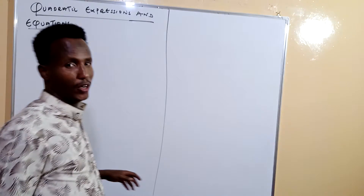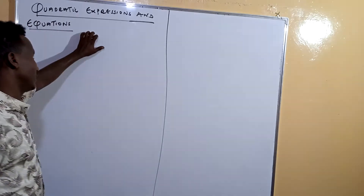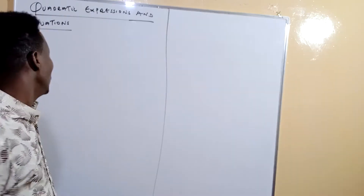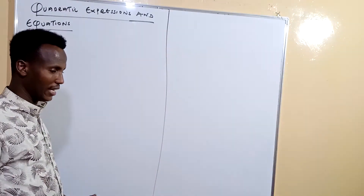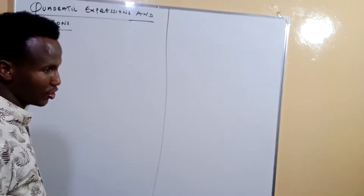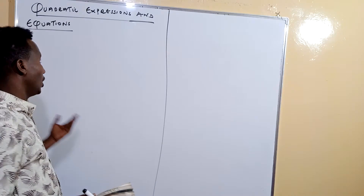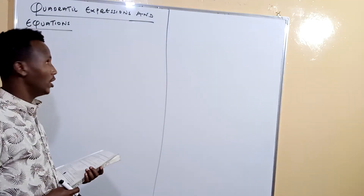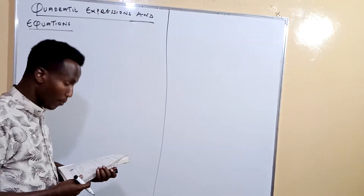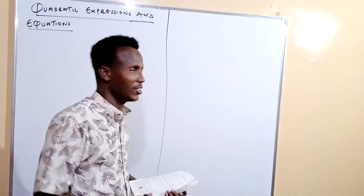Let's come back. We're going to discuss mathematics for Form 3, the first chapter — quadratic expressions and equations. Remember, we learned this concept in our previous class in Form 2. It is basically similar, but here you will encounter different concepts. In Form 2 we learned factorization, getting the value of X, and expansion of quadratic expressions.